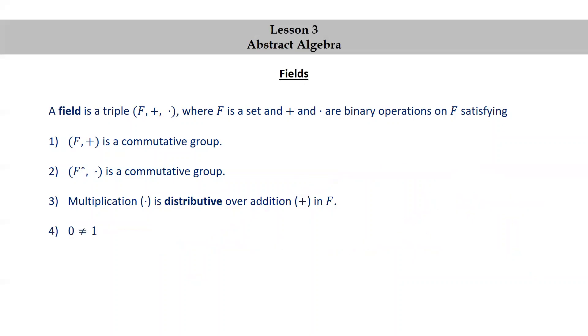And finally, the fourth property is that 0 should not be equal to 1. In other words, the additive identity needs to be different from the multiplicative identity.